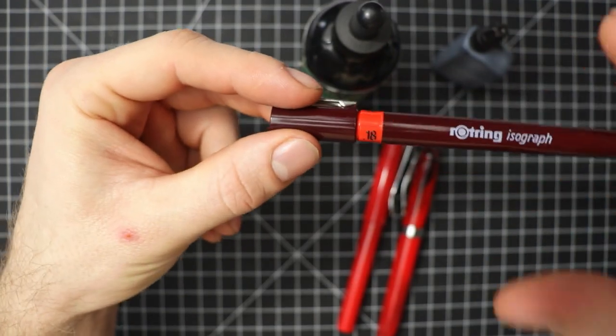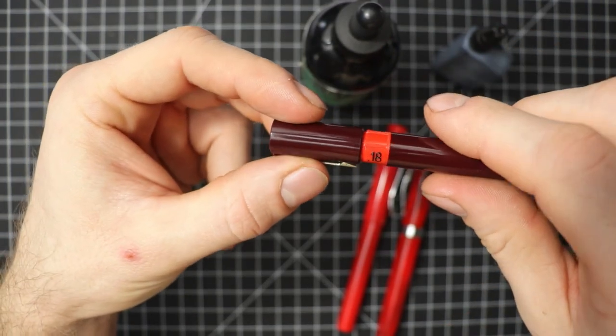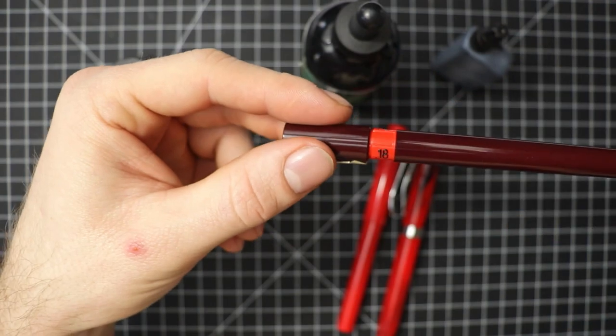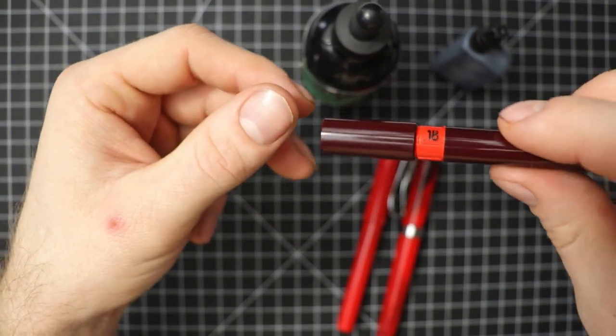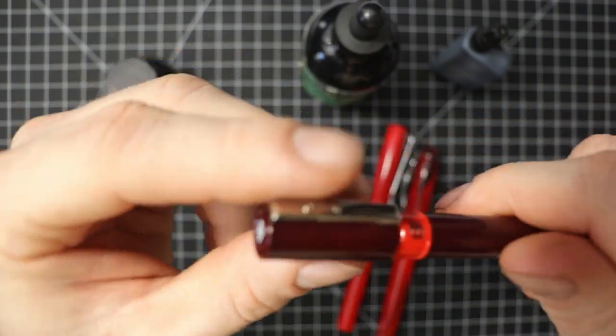The ink kept leaking out the end of it and then after a while it just dried up and it was ruined and I tried drawing with it. The nib got bent so I had to buy another one and with these pens.